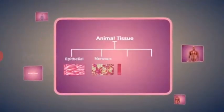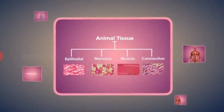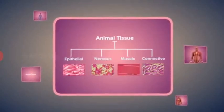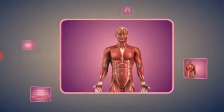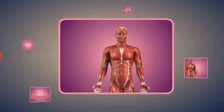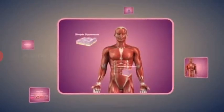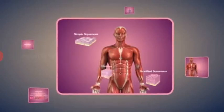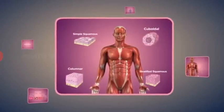Animal tissues are grouped into epithelial, nervous, muscle, and connective tissues. Epithelial tissues are subdivided into simple squamous, stratified squamous, columnar, and cuboidal epithelium.